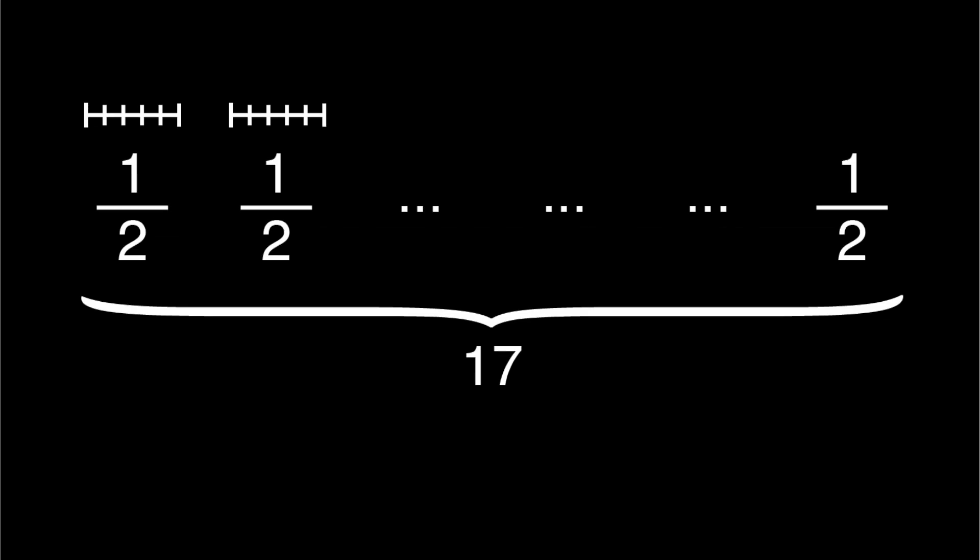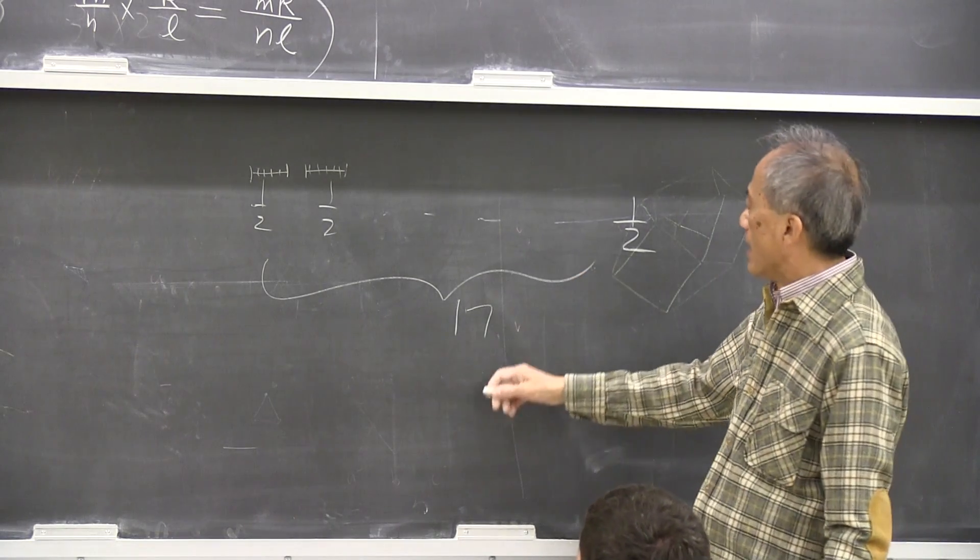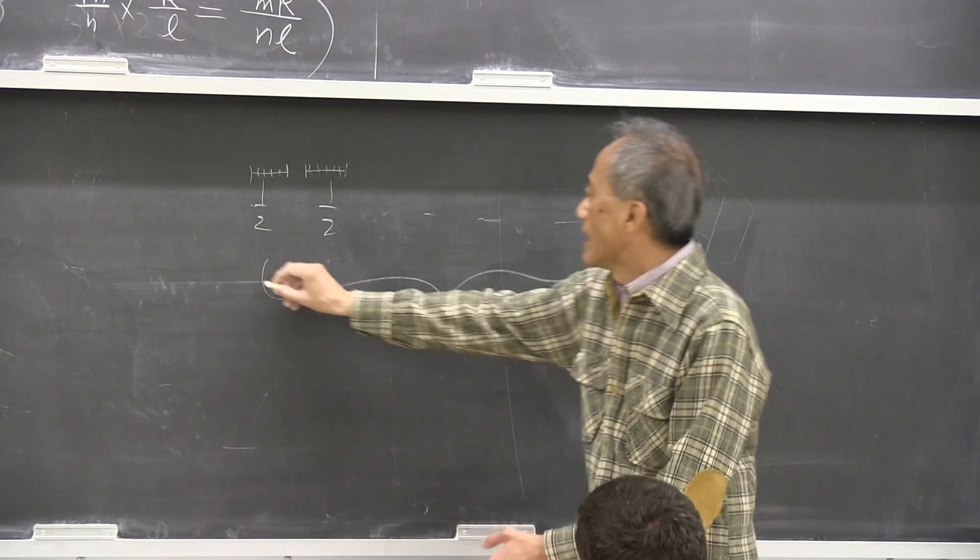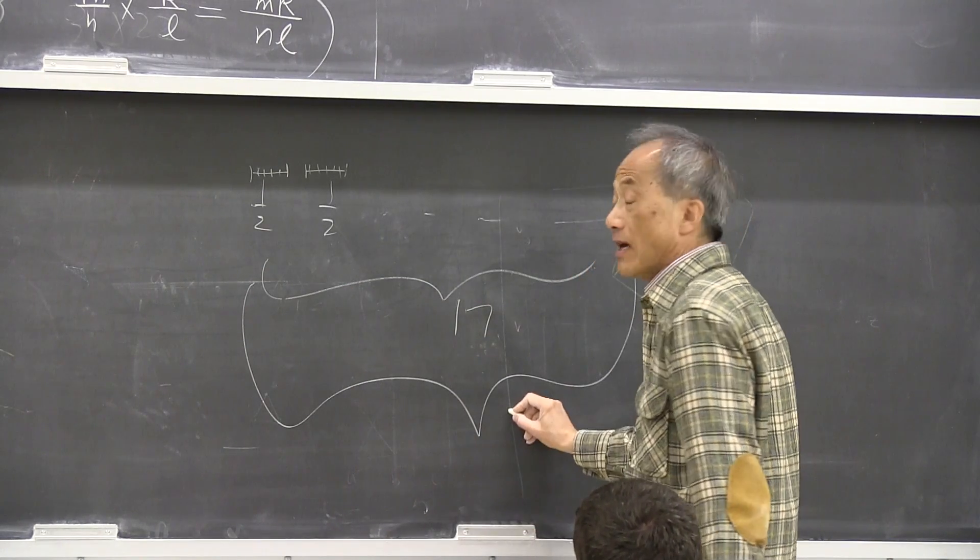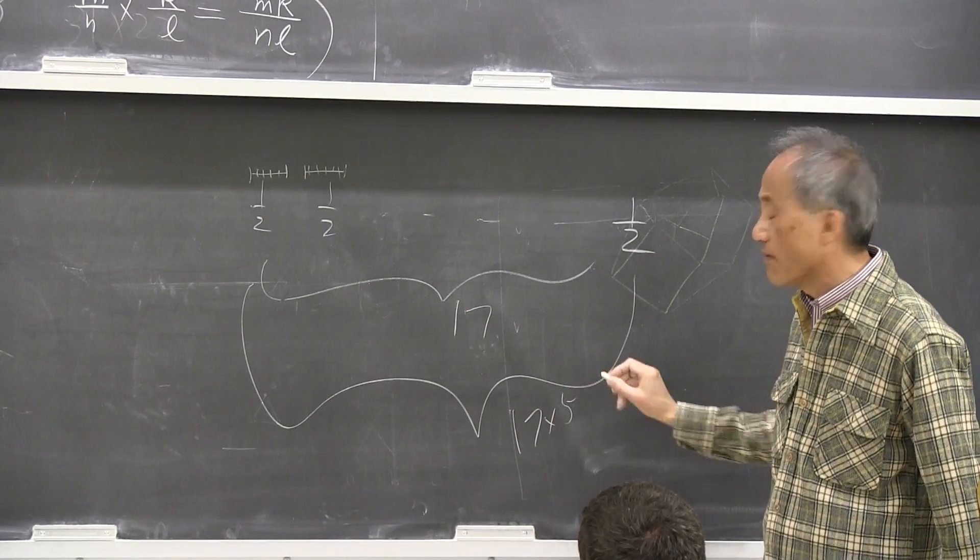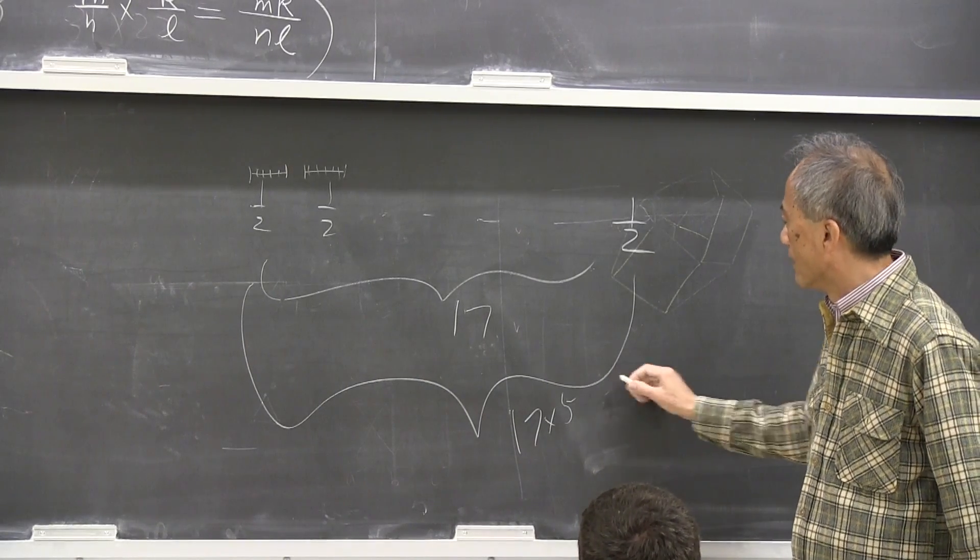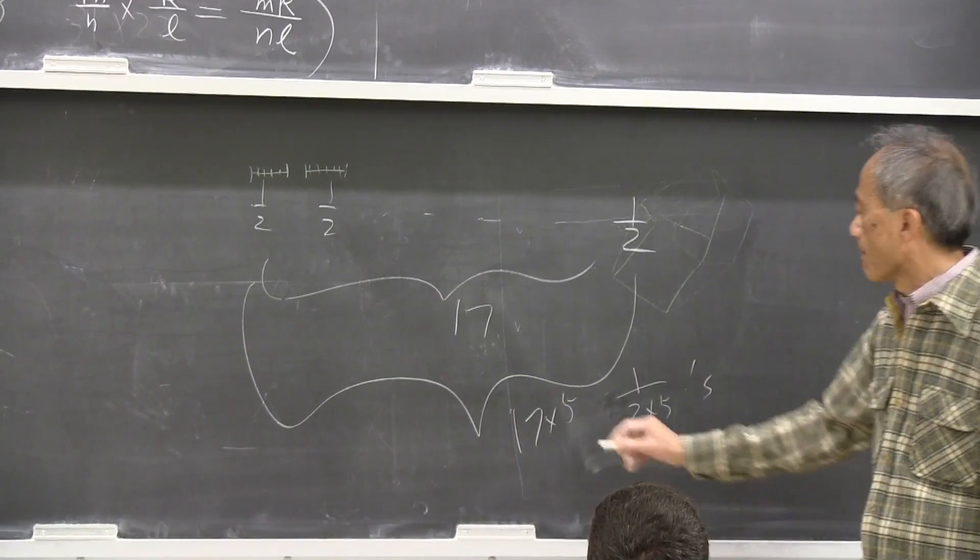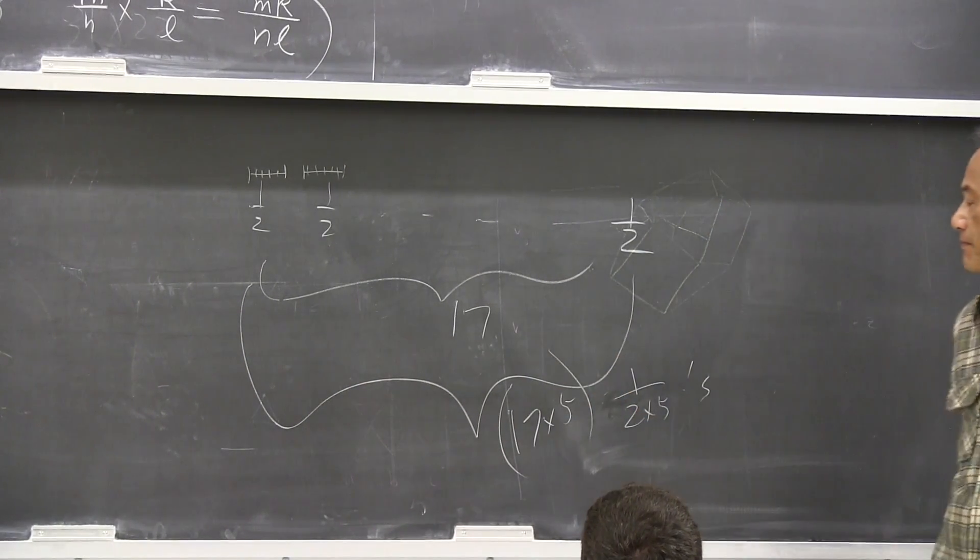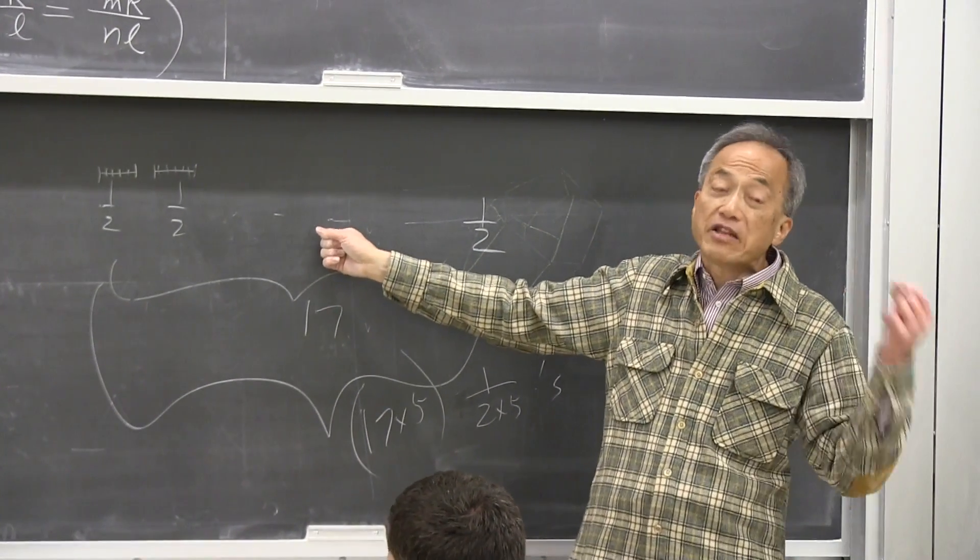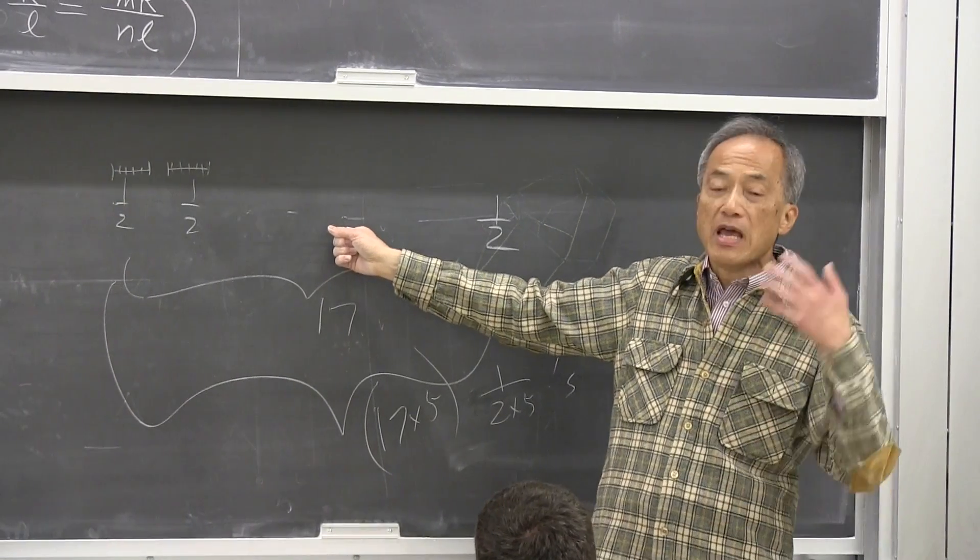And then it's ten. All right? When that happens, so instead of 17 halves, what you get is what? How many? How do you count? 17 times 5 of tenths. Five times 2 equals 10. 1 over 2 over 5, right? Am I too fast? There are 17 halves. Right. But each half is now divided into five, partition into five equal parts.